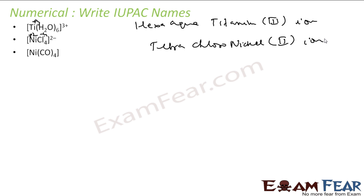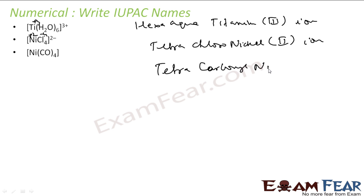Last: Ni(CO)4 — there is no charge anywhere. So there are 4 carbonyl groups as ligands: tetracarbonyl. Then nickel with charge zero. This is the name of this compound.